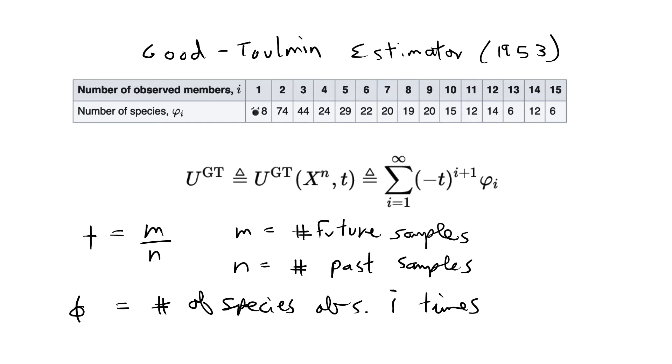So this table already gives you the values for phi i. As we have already said, you observe 118 species of butterflies one time, you observe 74 species twice, etc. Even though this estimate is very old, it still holds up pretty well, and it's actually pretty easy to plug in as well.